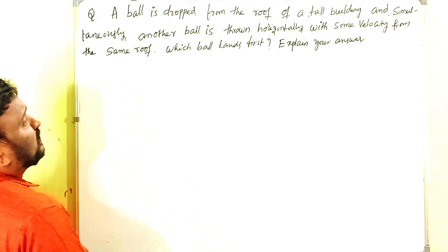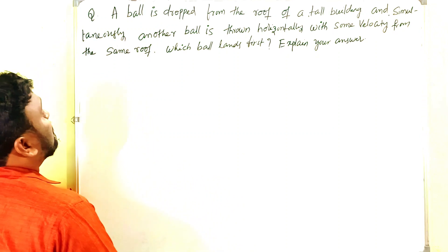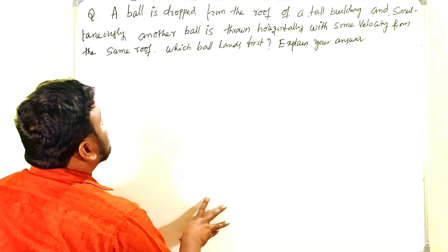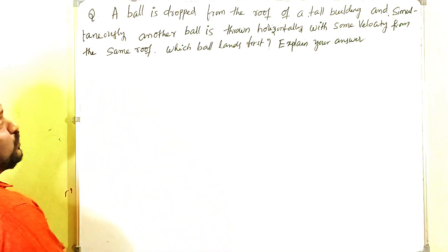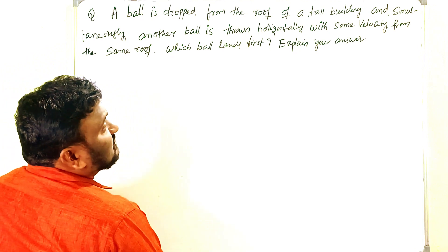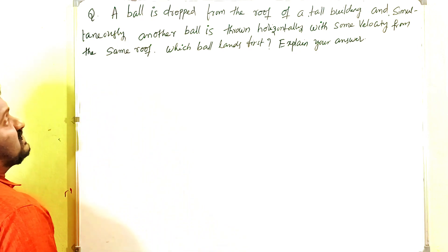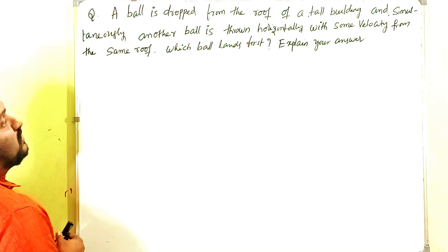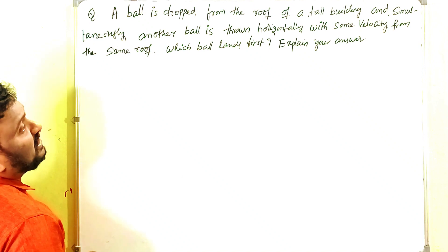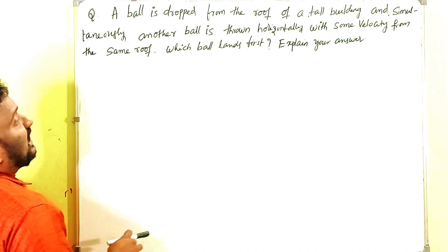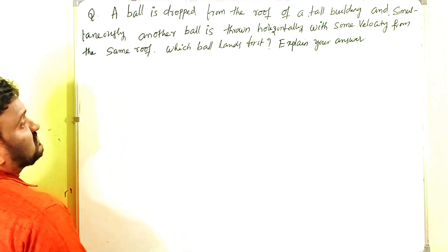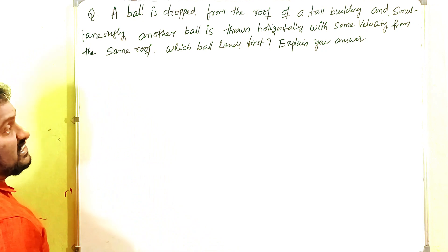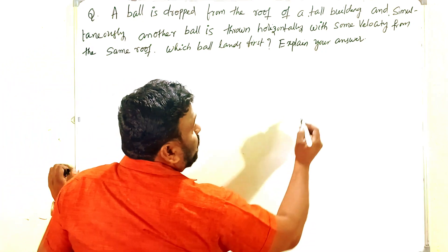A ball is dropped from the roof of a tall building and simultaneously another ball is thrown horizontally with some velocity from the same roof. Which ball lands first? Explain your answer. That is the question.